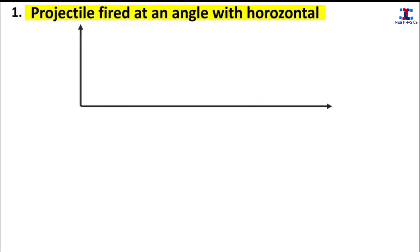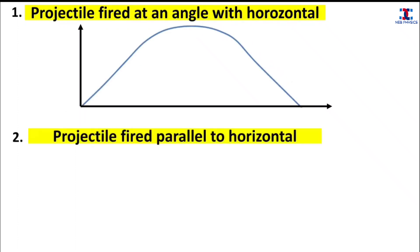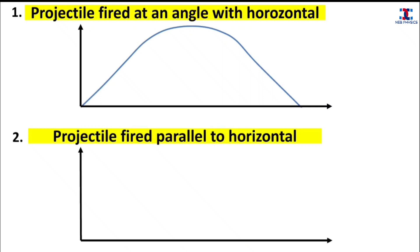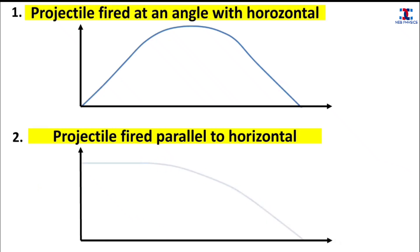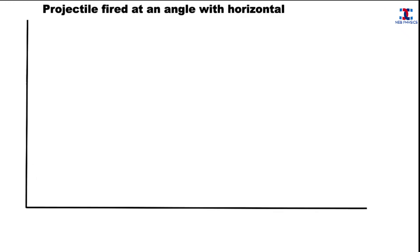Basically, there are two ways of firing a projectile. A projectile can be fired at an angle with the horizontal, or a projectile can also be fired parallel to the horizontal. However, in this video we will only study about a projectile fired at an angle with the horizontal.